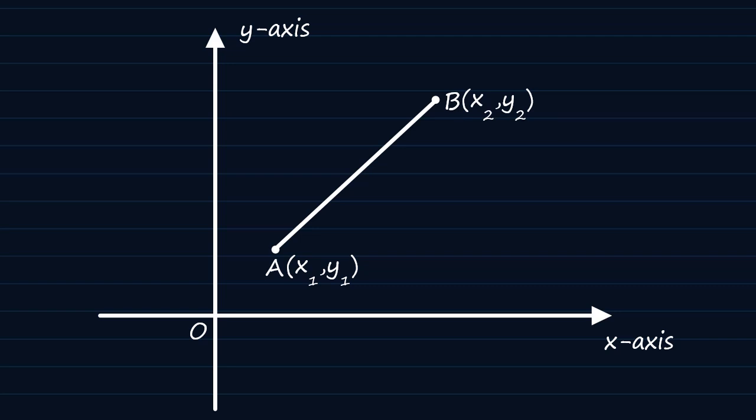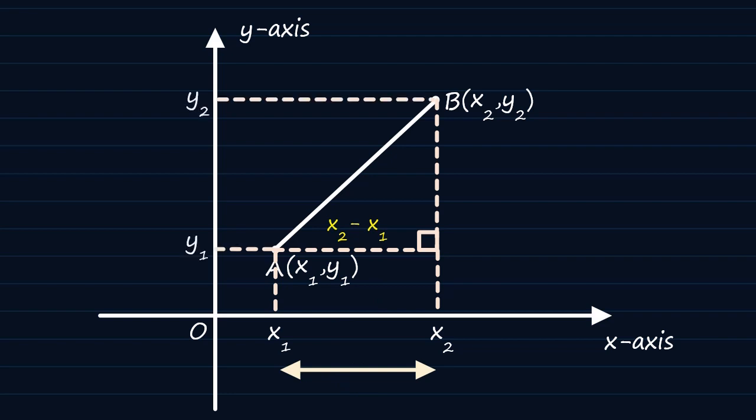To find the gradient of the line AB we would need the horizontal and vertical displacements. The horizontal displacement, which is change in x, in this case is x2 minus x1. The vertical displacement, which is change in y, is found by saying y2 minus y1.